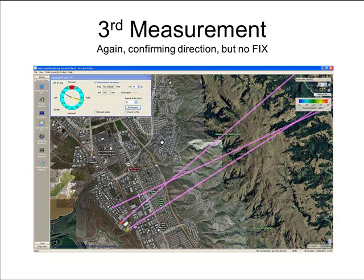A fixed point has not been calculated because there are actually two possible fixed points shown on the map — one just left of center for bearing measurements 2 and 3, and one toward the top right of the screen for bearing measurements 1 and 3. Knowing where the emitter is, we would believe the fixed point toward the top right is the correct one. However, the system does not have prior knowledge; it is just trying to provide the answer based on the data available to it. As emphasized previously, the purpose of this example is to show how the system copes in a real-world situation.